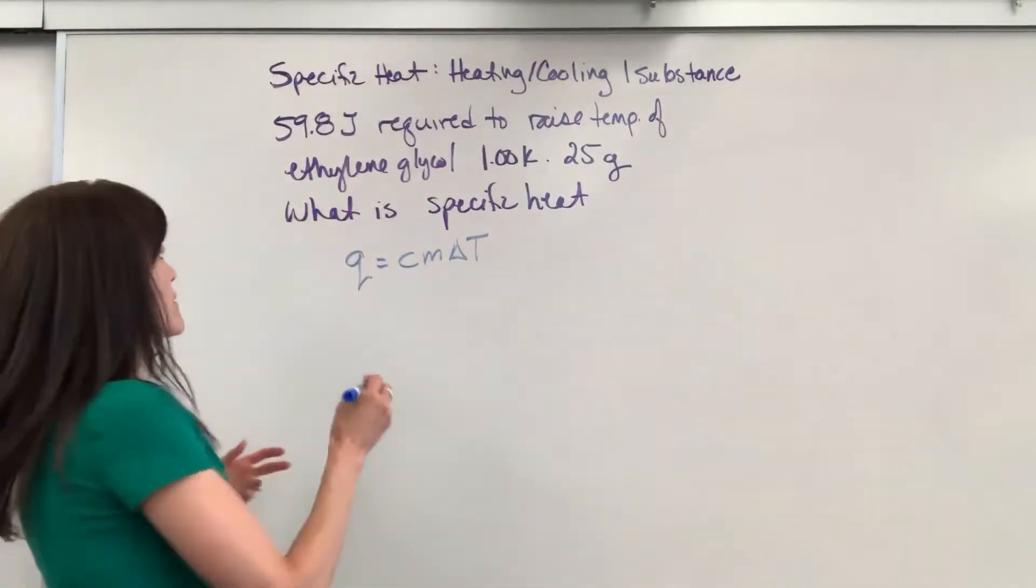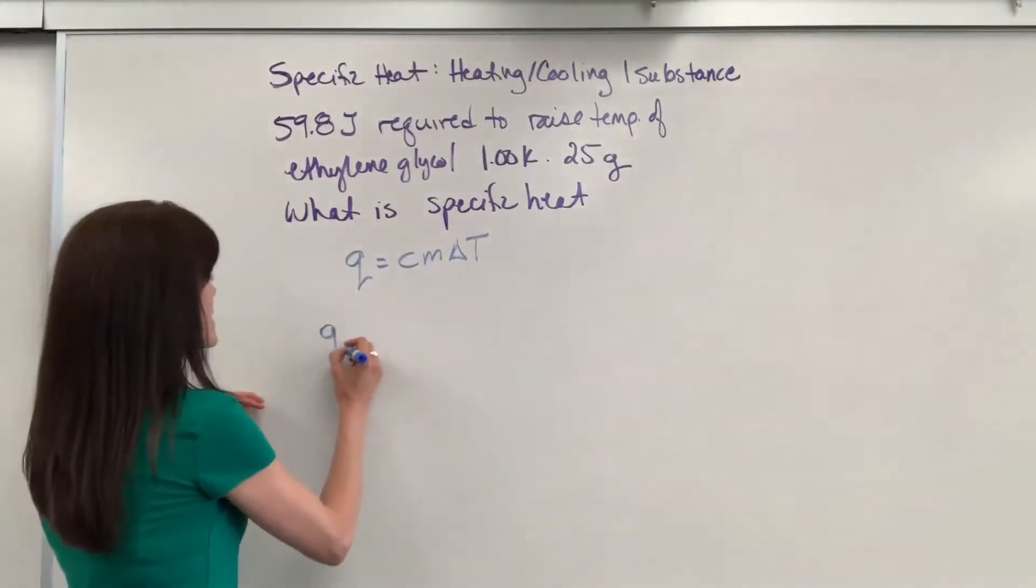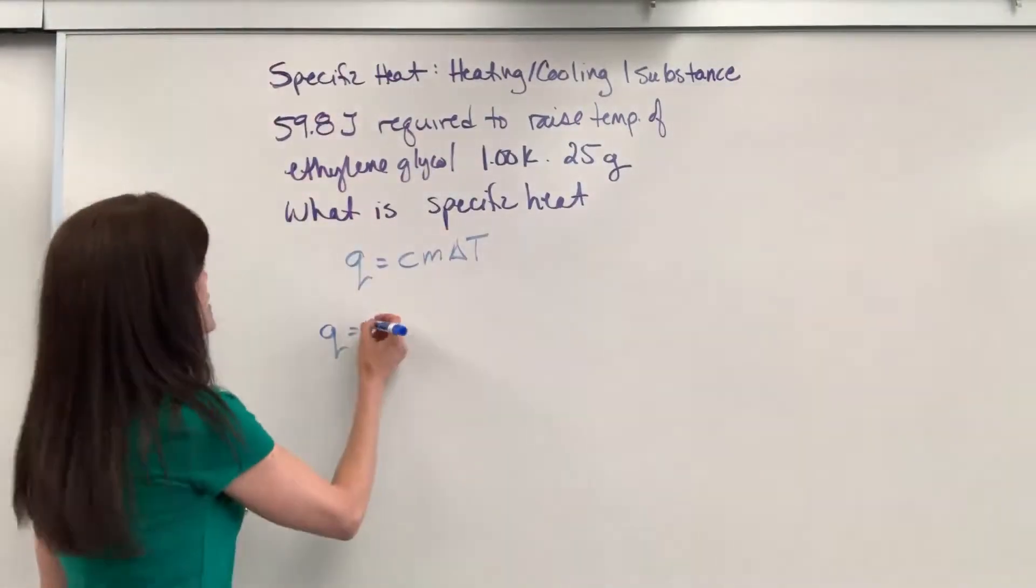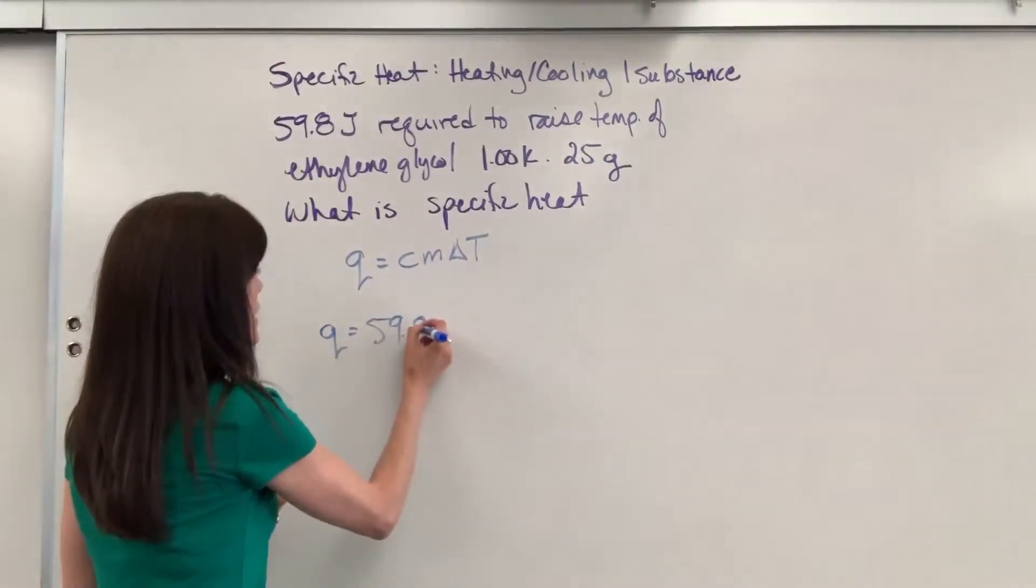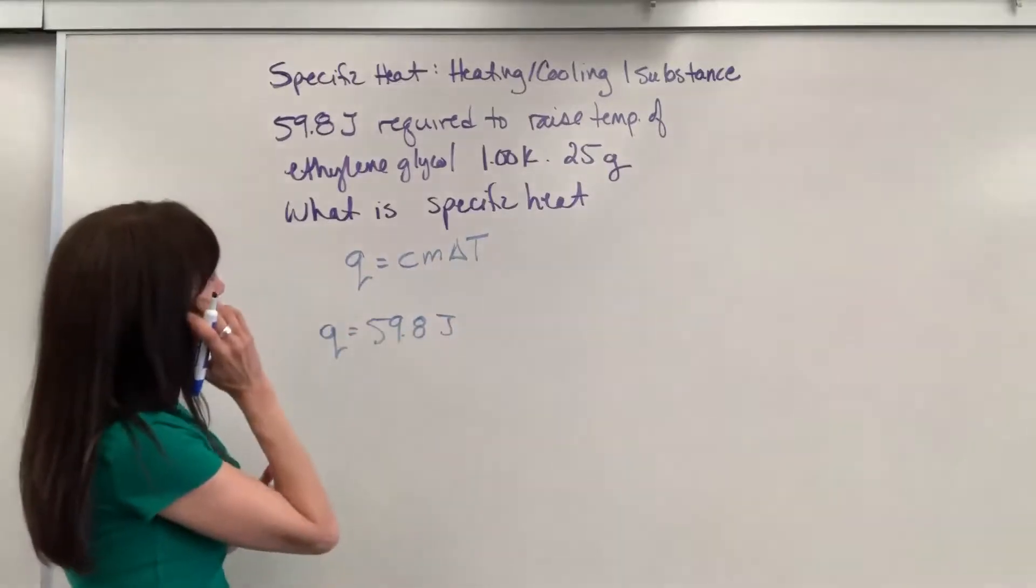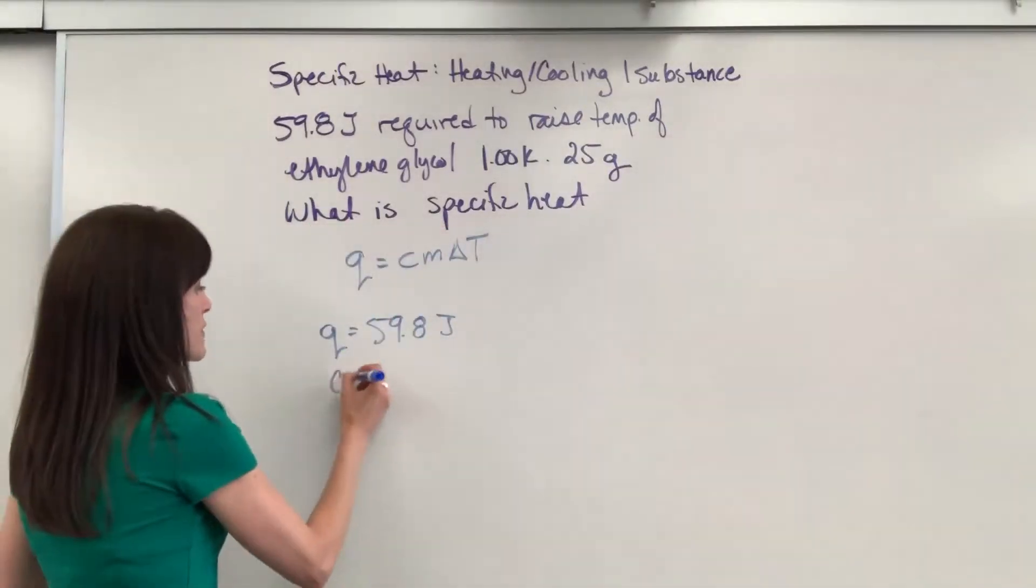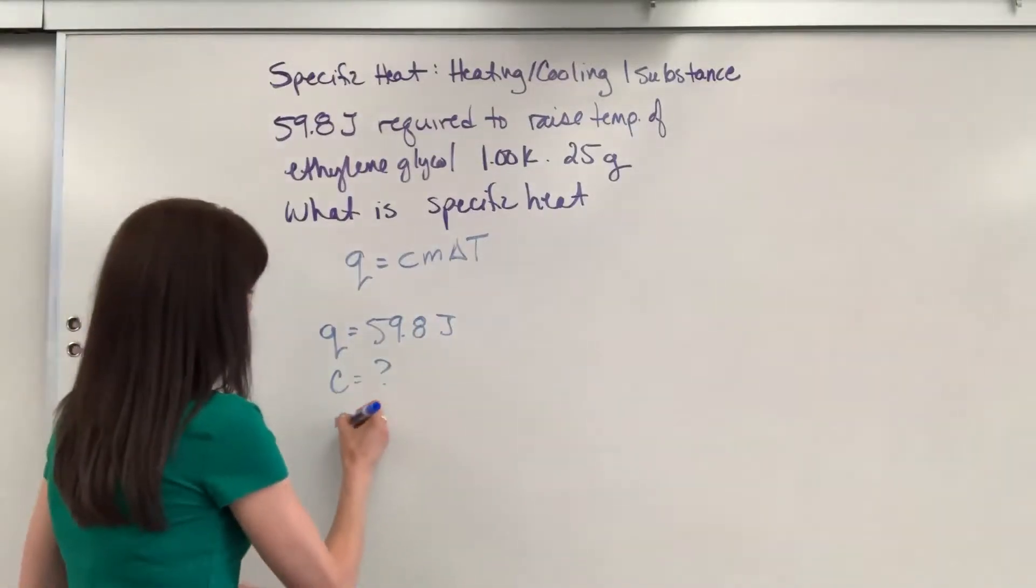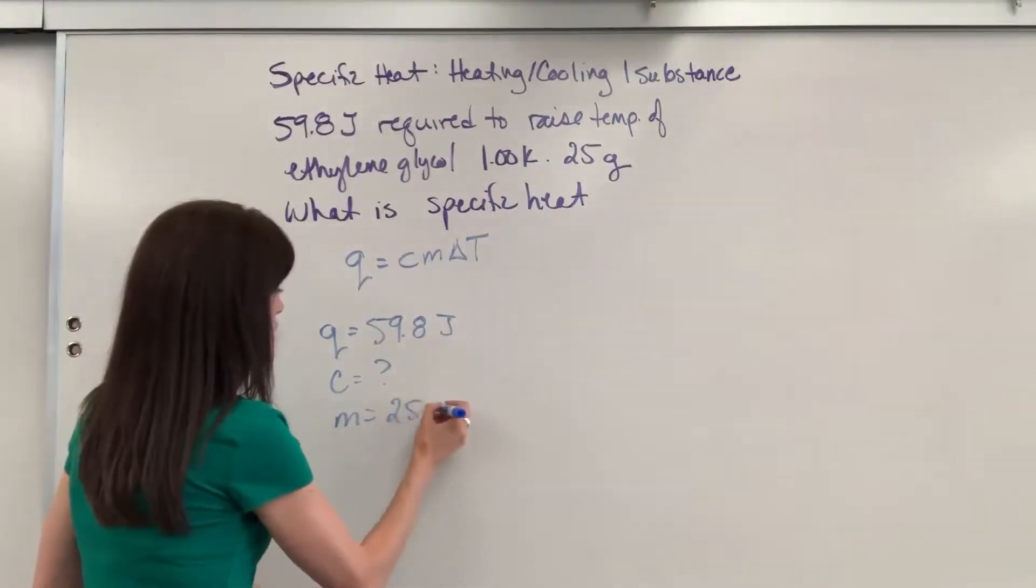So let's go ahead and label everything. So they gave us the heat. Whenever you see joules or kilojoules, that's going to be your Q. So we have 59.8 joules. It wants to know what is a specific heat. That's my unknown. Mass of the ethylene glycol is 25 grams.